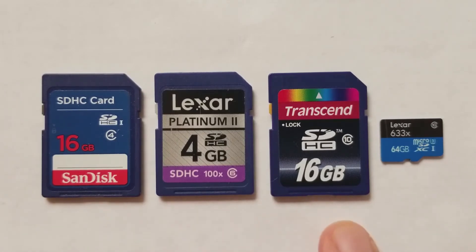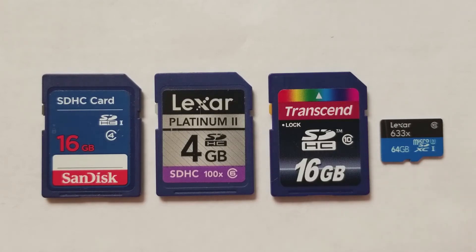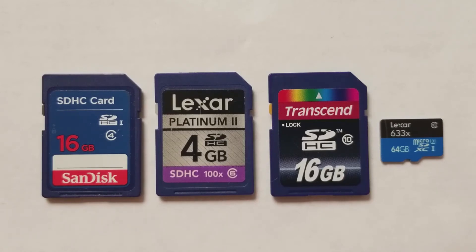The first three cards are older and don't have any UHS marking, but the Lexar card I bought recently shows 'U3' — a number 3 inside a 'U' — meaning it's a UHS3 card. UHS stands for the minimum sustainable writing speed. UHS3 means a minimum write speed of 30 MB/s, while UHS1 supports a minimum of 10 MB/s. Currently in the market we have UHS1 and UHS3, and UHS3 is the faster of the two.